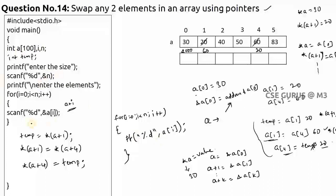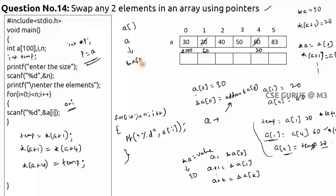Note that I have not created any separate pointer variable. If you want, you can declare int *p and assign p = a. Then write *(p+1) = *(p+1), *(p+1) = *(p+4), and *(p+4) = temp. Without a separate pointer variable it works directly, which is why we say arrays are one type of pointer. 'a' gives the base address of the array.